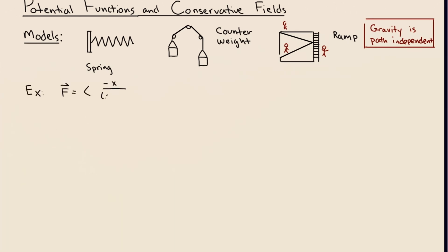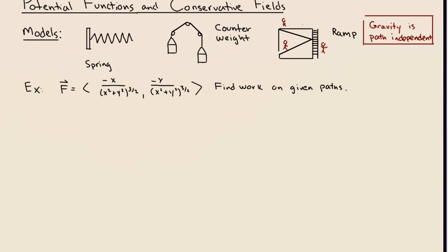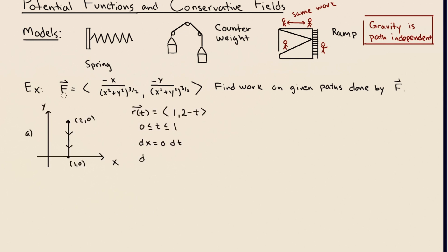This is the force due to gravity, and I really don't have this memorized — we are genuinely discovering this together. We're going to find the work done by gravity to move the particle from (1, 2) down to (1, 0). In this example these are objects floating in space, and the force due to gravity points toward the origin.